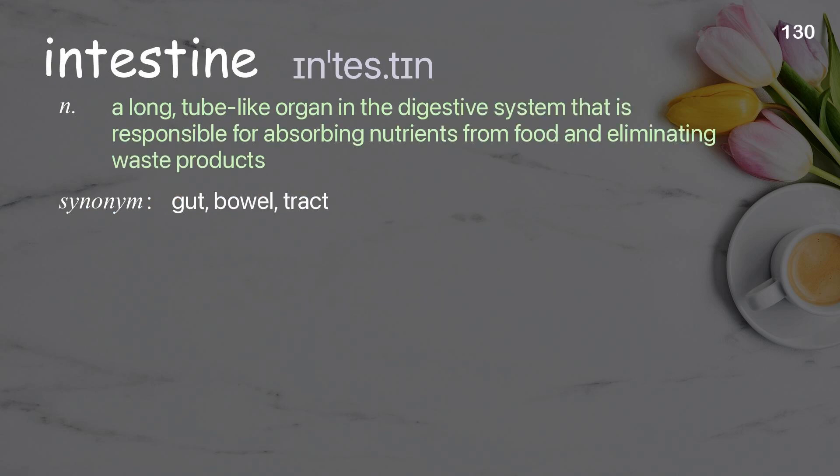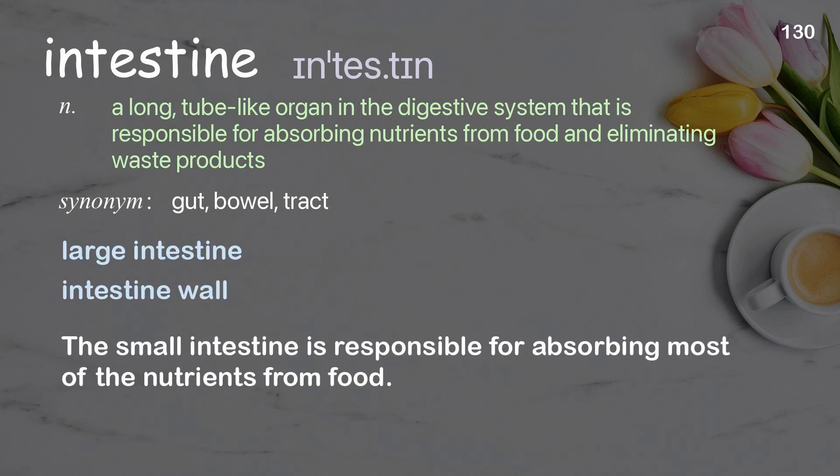Intestine: a long, tube-like organ in the digestive system responsible for absorbing nutrients from food and eliminating waste products. Examples: large intestine, intestine wall. The small intestine is responsible for absorbing most of the nutrients from food.